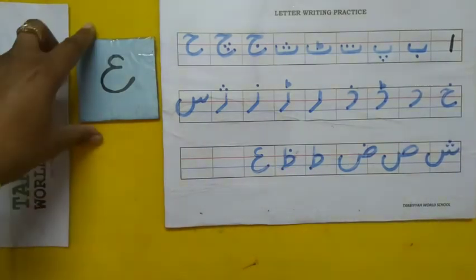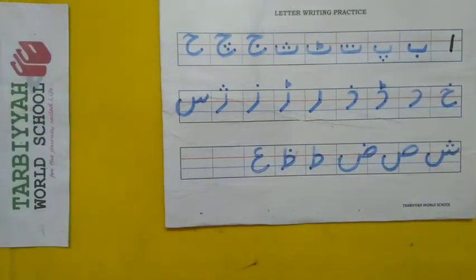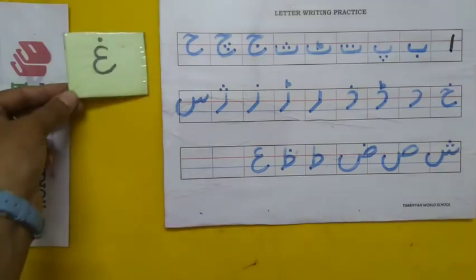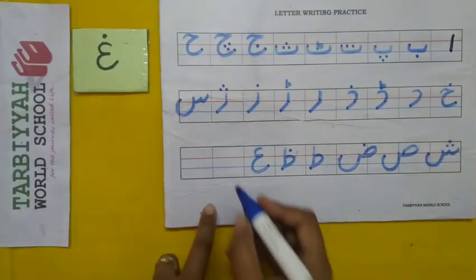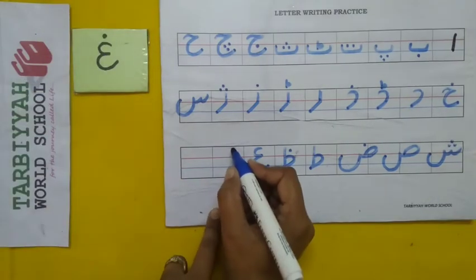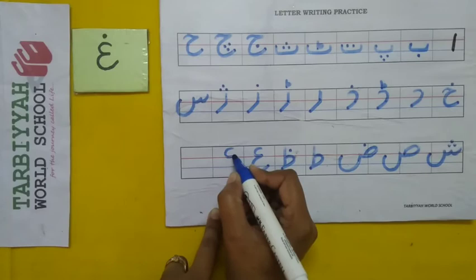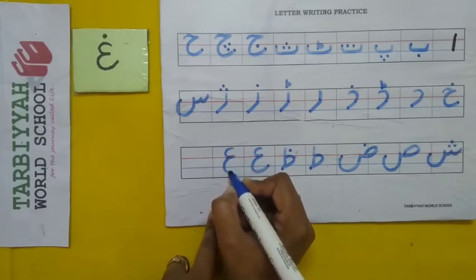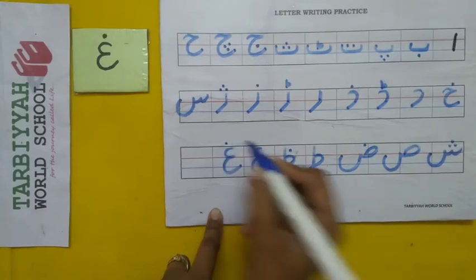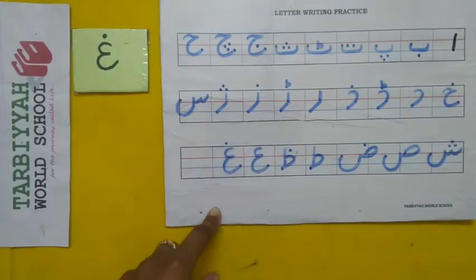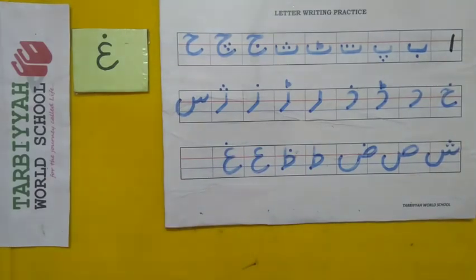And then the next letter is Gain. So how do we write Gain? Same shape as Ayin, and one dot on top. Like this.